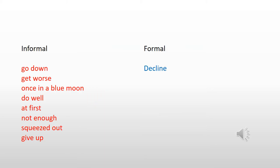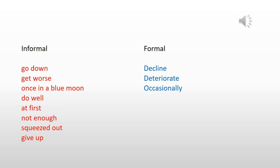Here are some possible answers. The words "go down" can be replaced by "decline". Instead of saying "get worse", we can say "deteriorate". "Once in a blue moon" can be replaced by "occasionally".